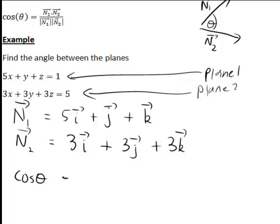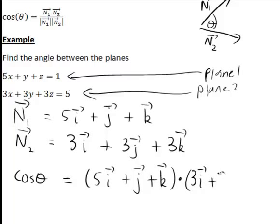So now let's work out our formula for this case. Cosθ is n1, which here is 5i plus j plus k, in a dot product with 3i plus 3j plus 3k for n2.